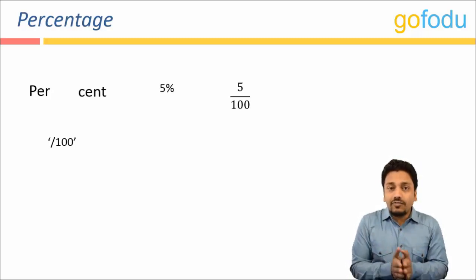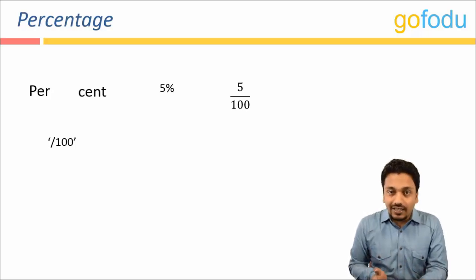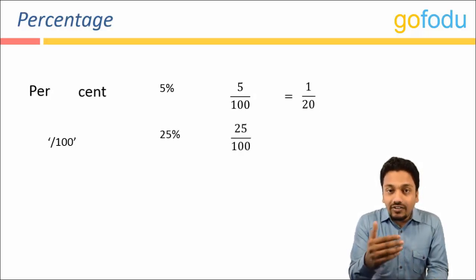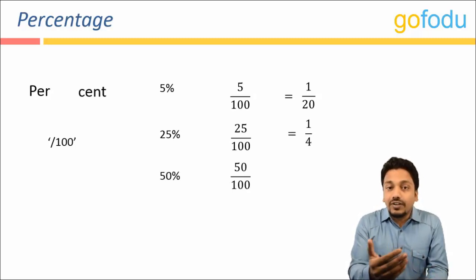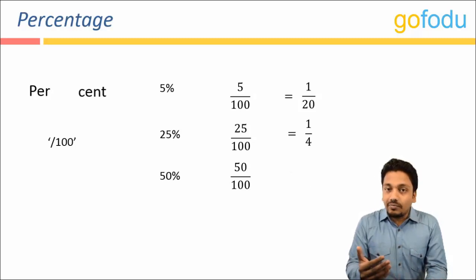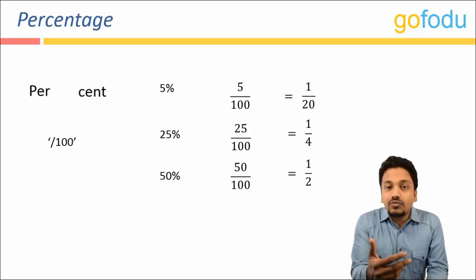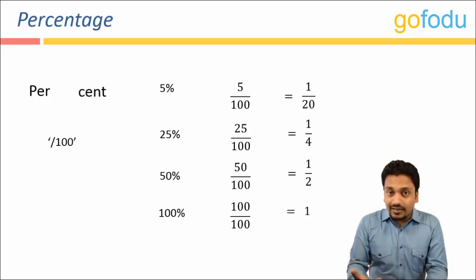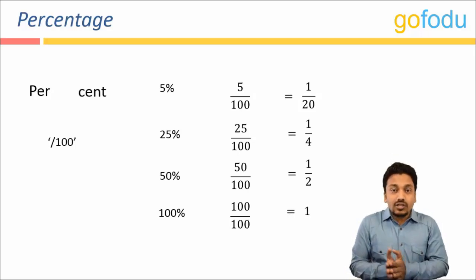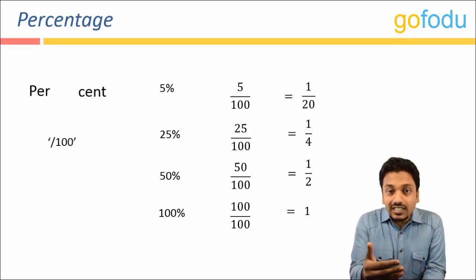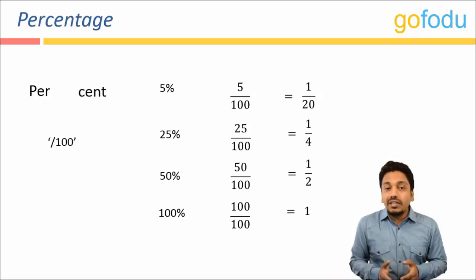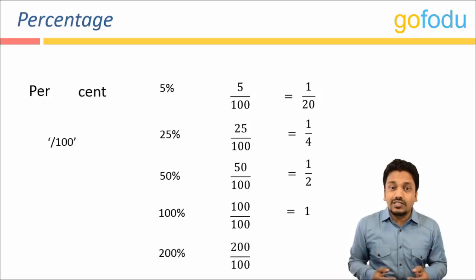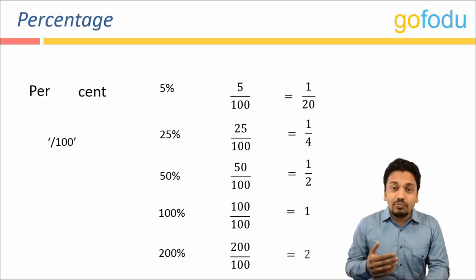So five percent would mean five divided by hundred, that is one by twenty. Similarly, twenty-five percent would be twenty-five divided by hundred, that is one by four. Fifty percent would be fifty divided by hundred, that is one by two. Hundred percent would be hundred divided by hundred, that is one. Now some people have the notion that percentages more than hundred are absurd, but that is wrong. Two hundred percent would be two hundred divided by hundred, and that would be two.